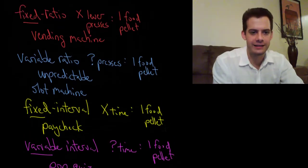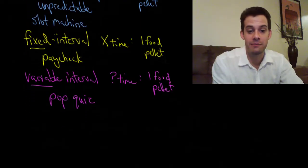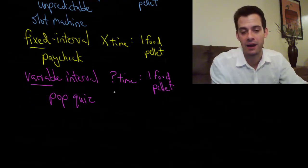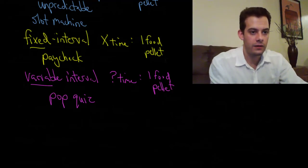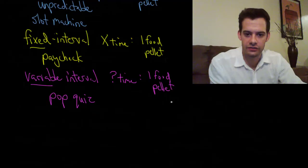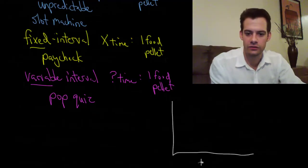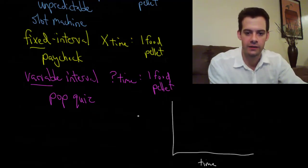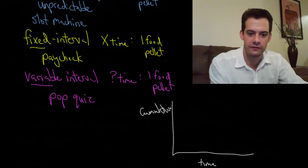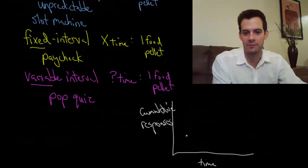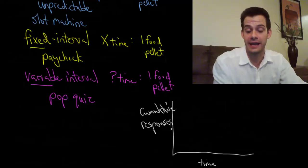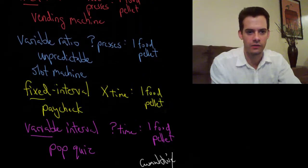Now that we have a general idea of these four different patterns, we can think about what the pen connected to the operant box would draw — what that line would look like for each schedule. This is what Skinner looked at. If we imagine one of these charts, we have time on one axis and cumulative responses — the total number of behaviors — on the other. Each lever press makes the pen click up, adding up the total behaviors over time.